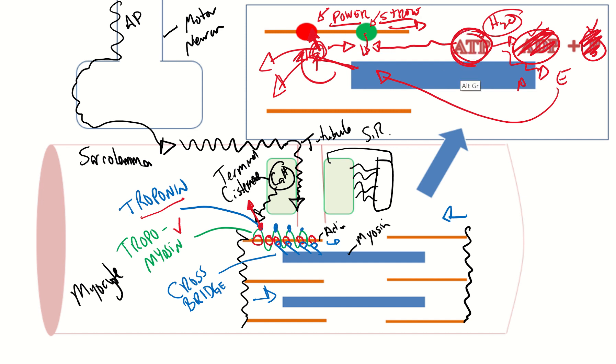Then you repeat it again. You add a new ATP, disconnect, hydrolyze it, get it to the new myosin binding site, drop the phosphate, it goes into the myosin binding site, you drop the ADP again and you power stroke and you continue to do that.